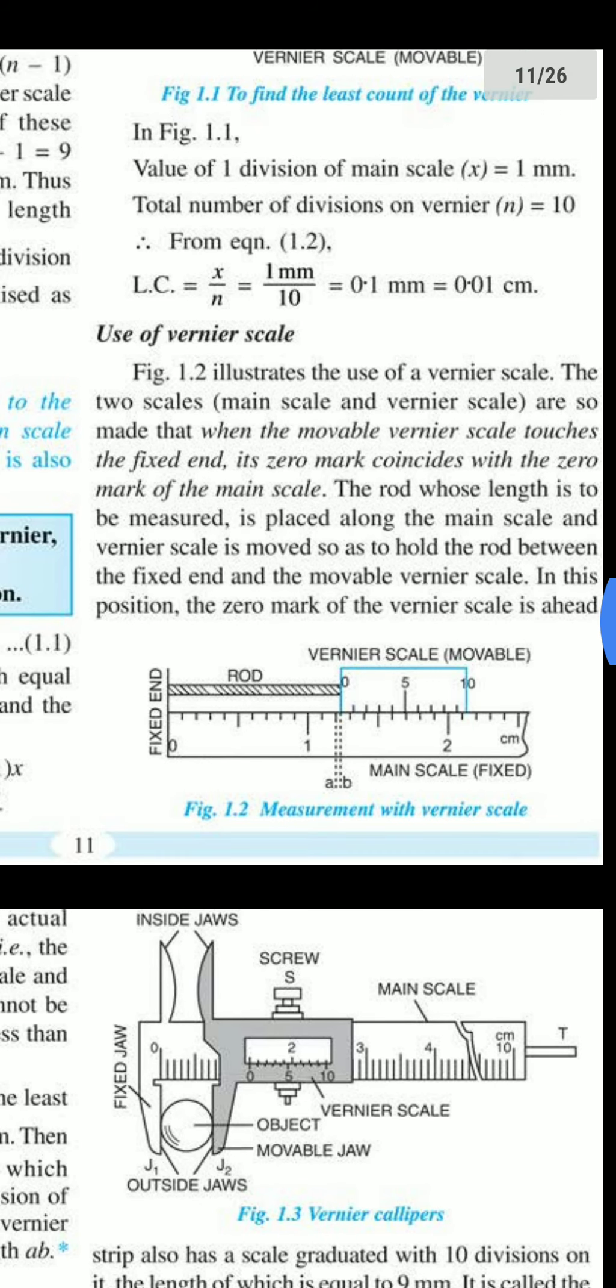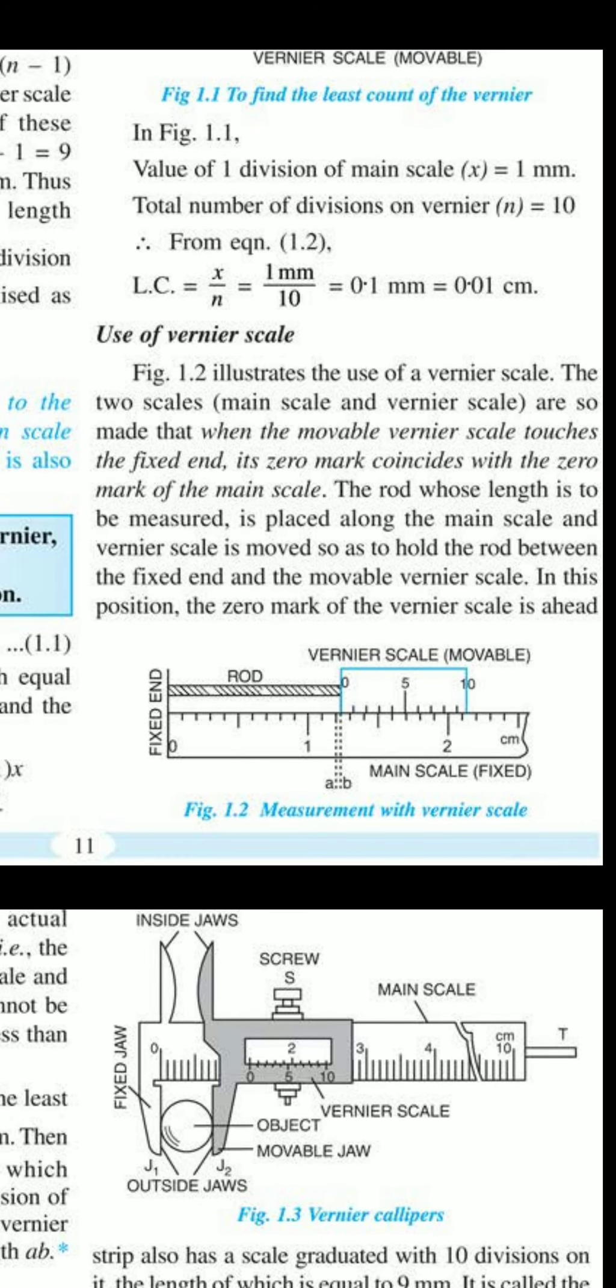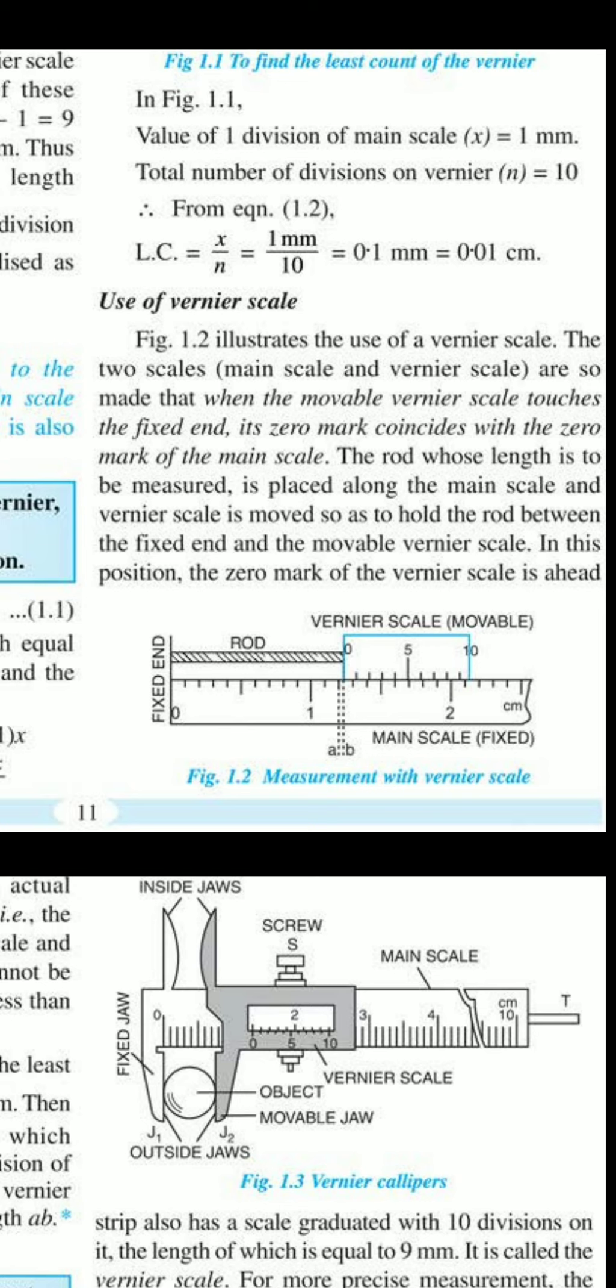Now come to Figure 1.2. When they have fixed a small rod here, see the main scale is measuring 1.2. But the rod is still a little more than that - more than 1.2. The main scale cannot measure that small distance, which is equal to the distance AB.